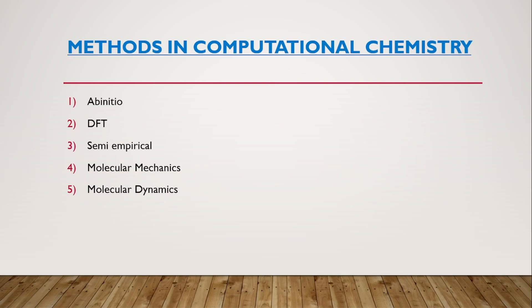In this video we will be discussing various methods used in computational chemistry. There are five methods mainly used: ab initio methods, density functional theory based methods, semi-empirical methods, molecular mechanics, and molecular dynamics.